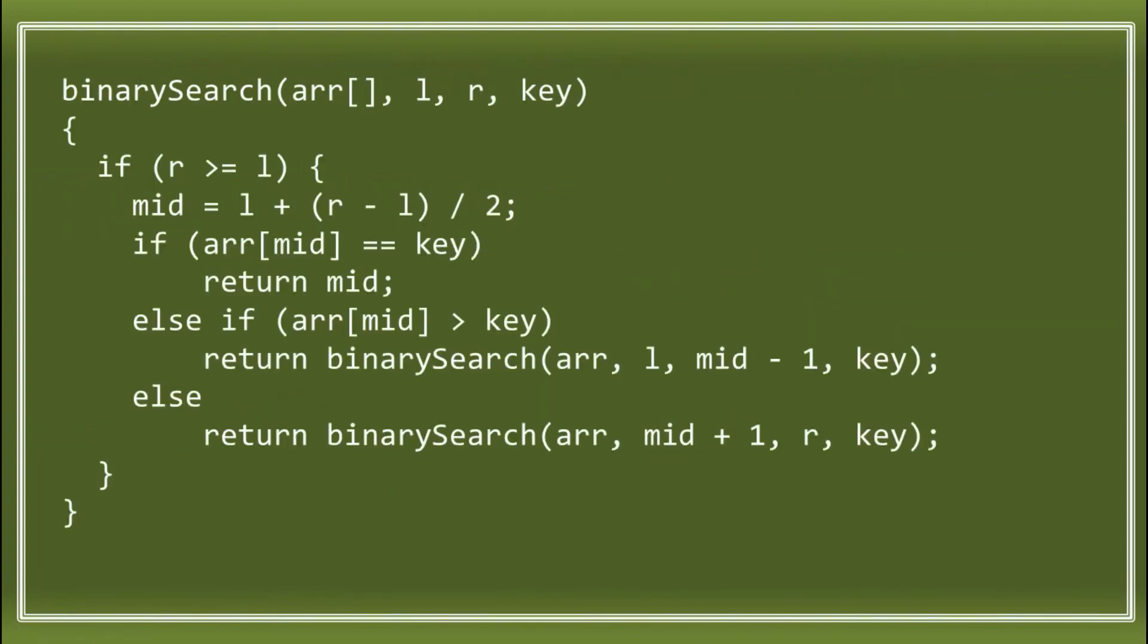Now, we have this sample code or algorithm that we can use. If you observe, this is a recurrence relation, which calls itself inside the function. For recurrence relations, we consider the first call as T of n. We can see here that to find the middle index equals 1. Then, we have our conditions. For the first condition, if the key equals the element inside the middle index, it returns the result. That is the best case.